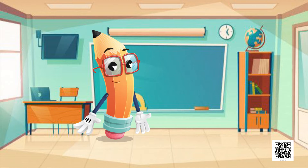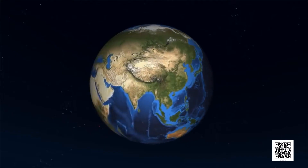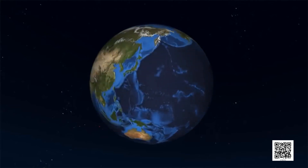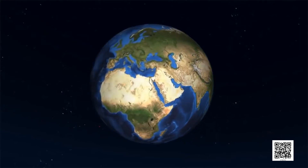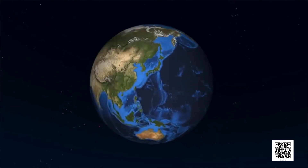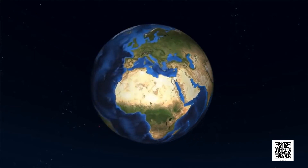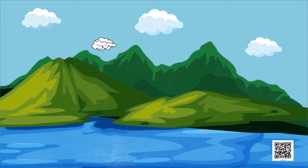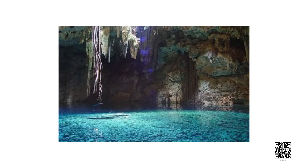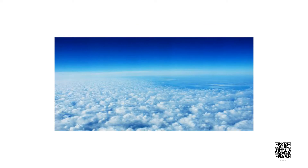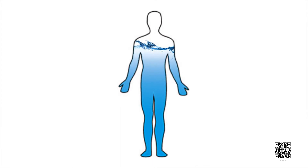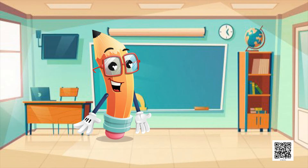Now let us see how much water is available. Our earth is a very beautiful planet, and you are aware that 71% of earth's surface is covered with water. Almost all the water on the earth is contained in the seas and oceans, rivers, lakes, ice caps, as groundwater, and in the atmosphere. The human body also has approximately 71% of water.